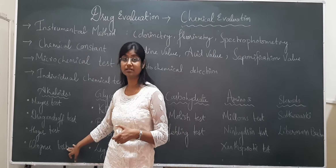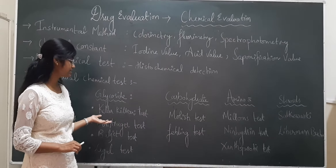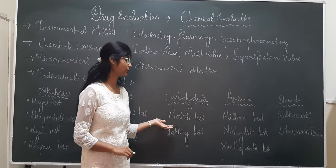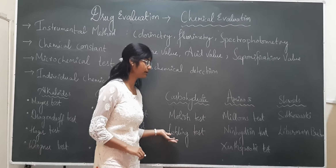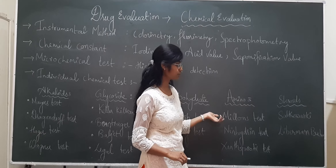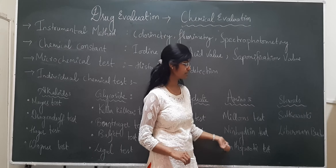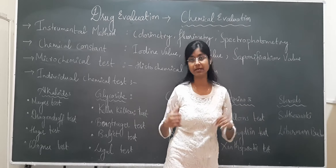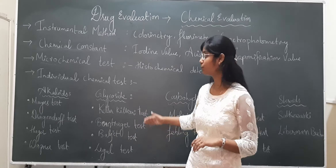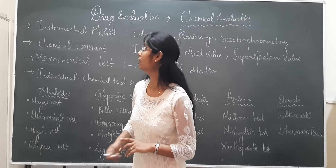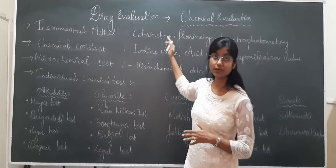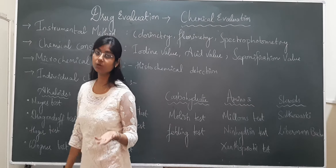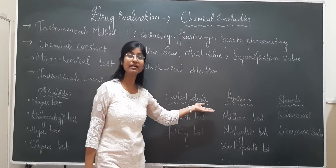For glycosides, tests include Keller-Killiani test, Borntrager test, Baljet test, and Legal test. For carbohydrates, Molisch test and Fehling test are used for sugars. For amino acids, the tests are Millon's test, Ninhydrin test, and Xanthoprotein test. For steroids, Liebermann-Burchard reaction and Salkowski test are used. These are all the named reactions and tests which fall under the categories of phytoconstituents. Detail regarding reagents and specific colors produced will be covered when we take individual phytoconstituent topics.